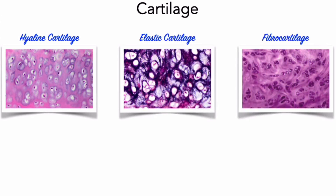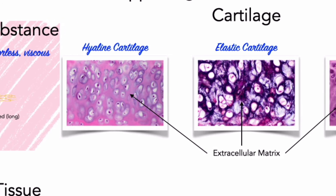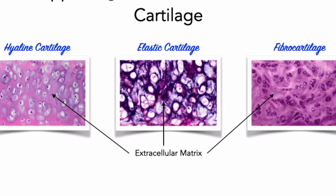Hyaline cartilage is the most common type of cartilage. The matrix contains closely packed collagen fibers, making hyaline cartilage tough but also flexible. This type of cartilage connects the ribs to the sternum, supports the conducting passageways of the respiratory tract, and covers opposing bone surfaces within joints. Elastic cartilage contains numerous elastic fibers that make it extremely resilient and flexible. Elastic cartilage forms the external flap of the external ear, the epiglottis, an airway to the middle ear, and small cartilages in the voice box.